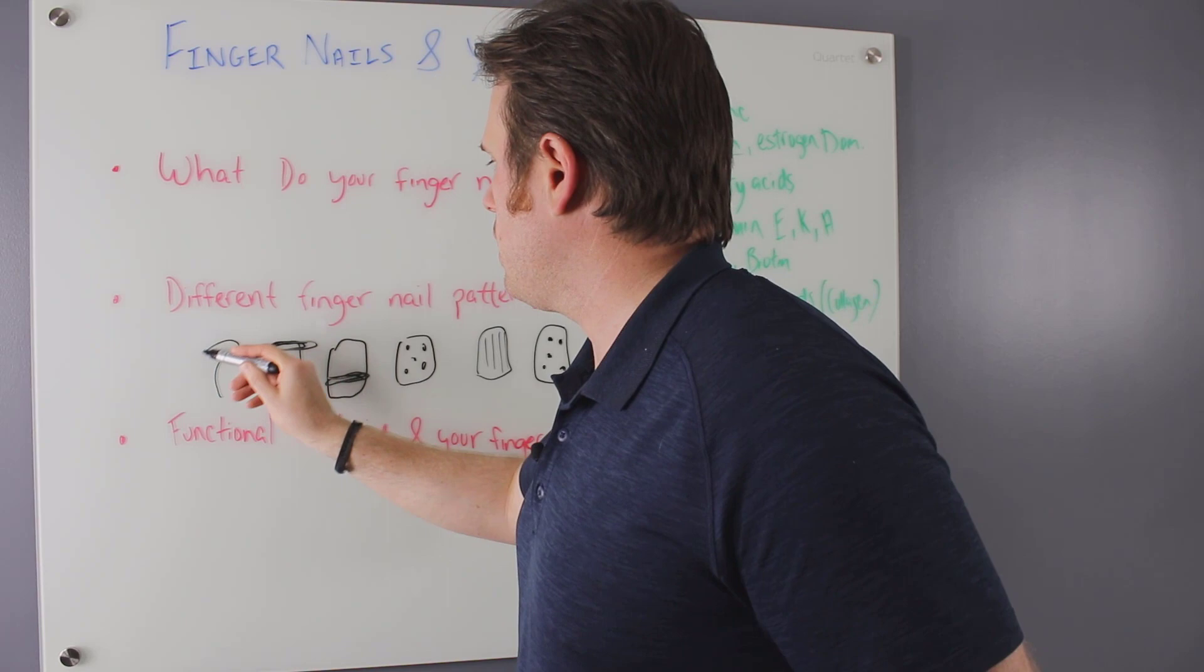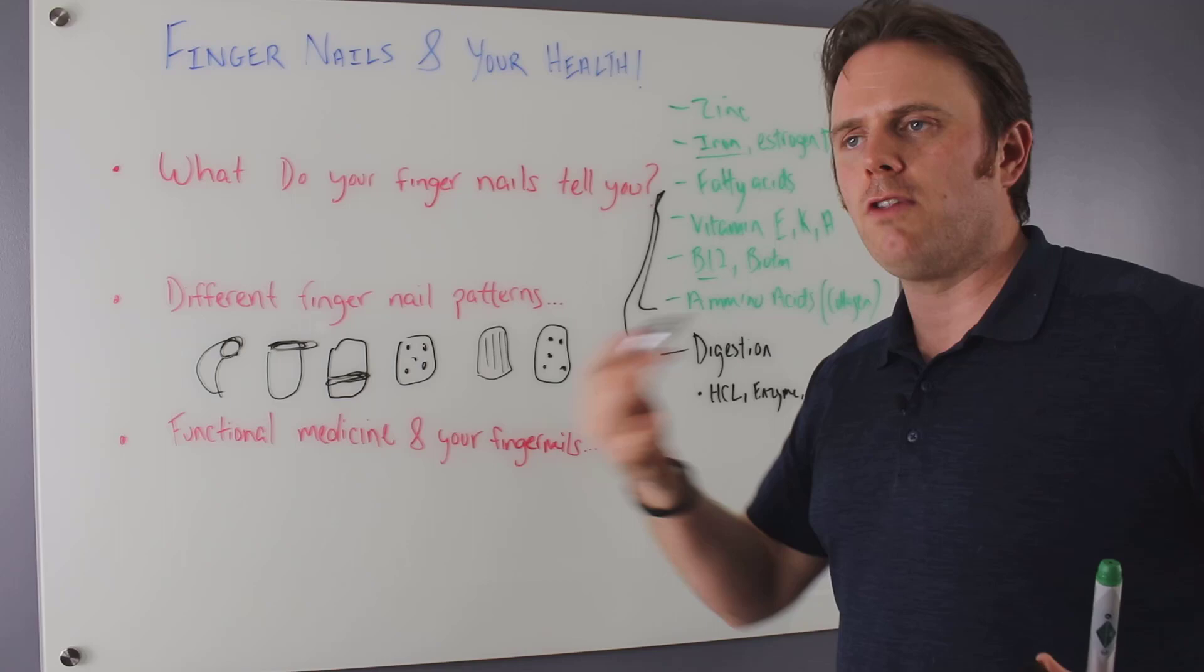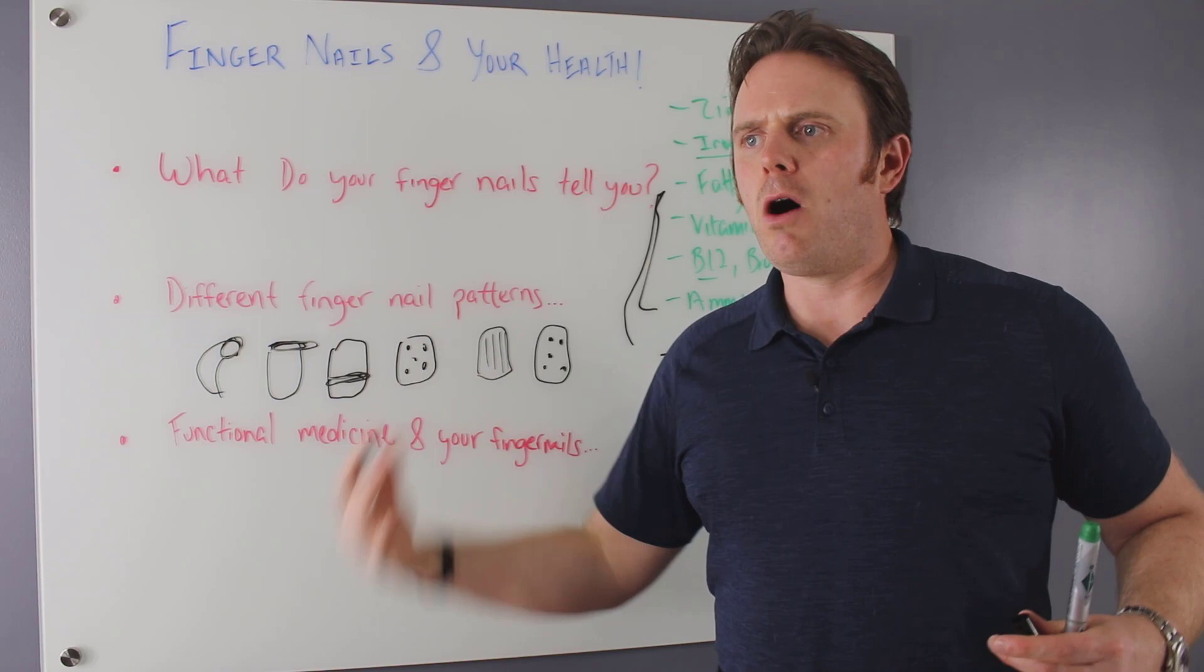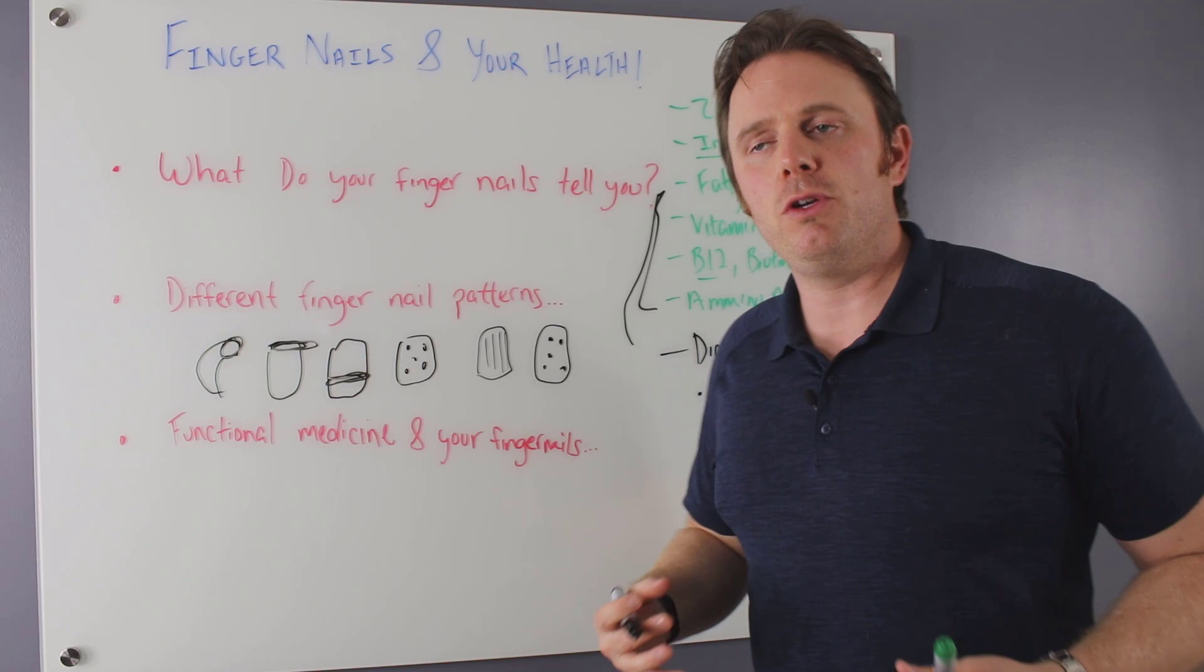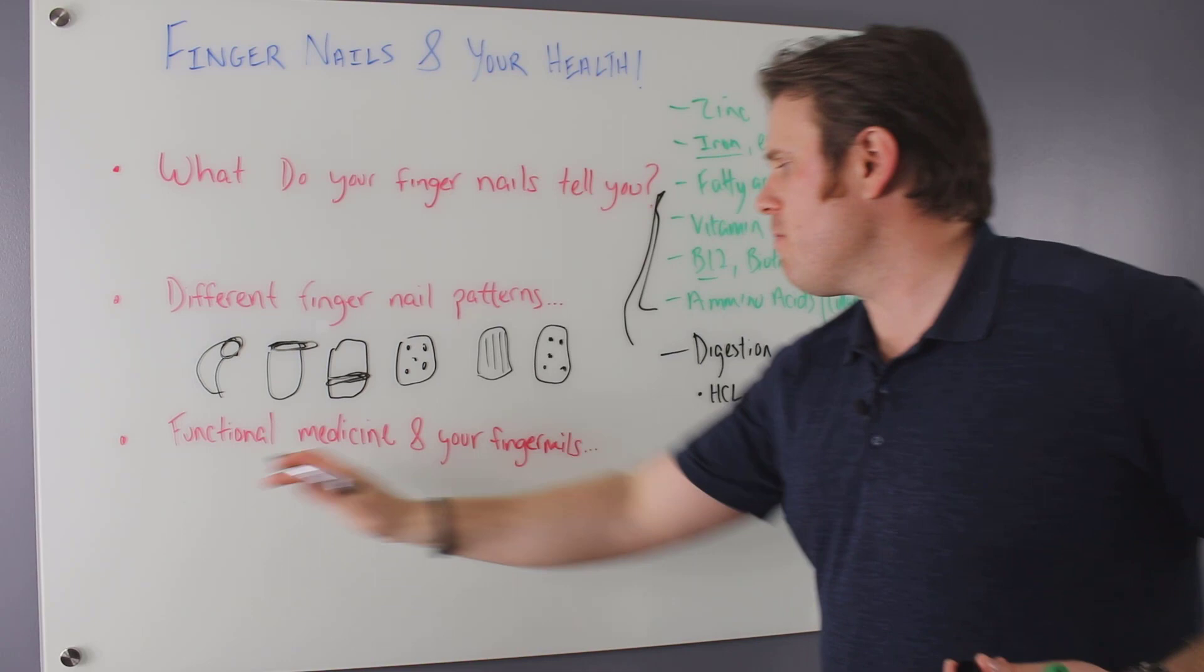And then we have clubbing. So clubbing would be more like a nail that kind of goes off the, just the edge of it, it clubs at the end. So when you see it, it kind of protrudes out at the end. And that clubbing can be caused by decreased oxygen flow. So low iron can be a big cause of that one. Also any kind of respiratory distress, congenital heart issues, respiratory, COPD issues, chronic obstructive pulmonary disorder, things that decrease oxygen getting into your body. You can see this clubbing that happens there as well.